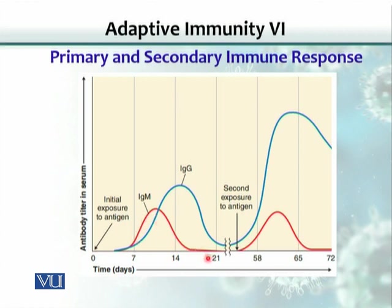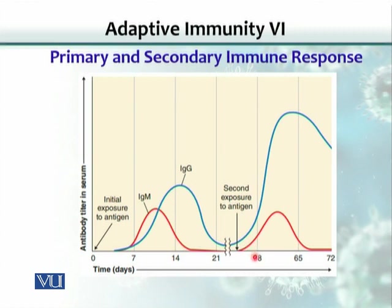Then, after two to three weeks, there would be a very low level of IgM left, but IgG would also, after peaking, start waning or disappearing. If you expose the body again, close to the third week after the first antigen exposure, you would see there will be an IgM response again from lymphocytes newly selected by the antigen.